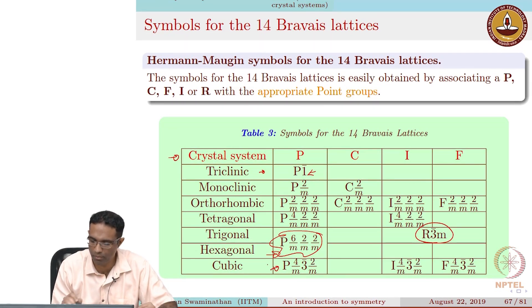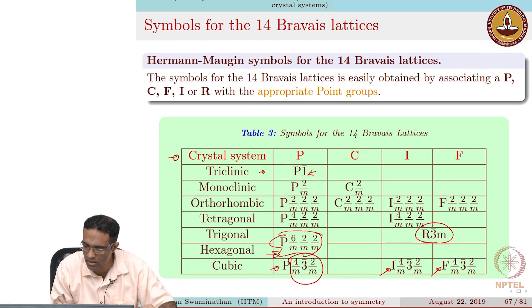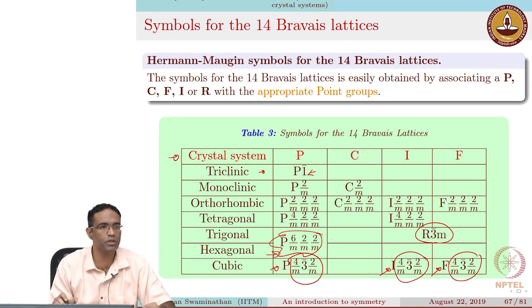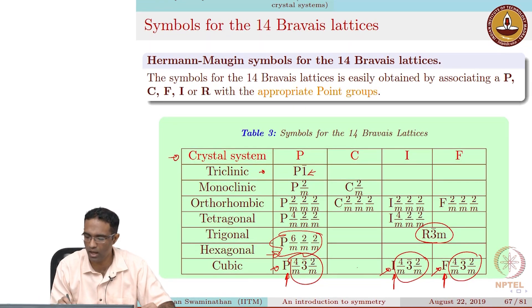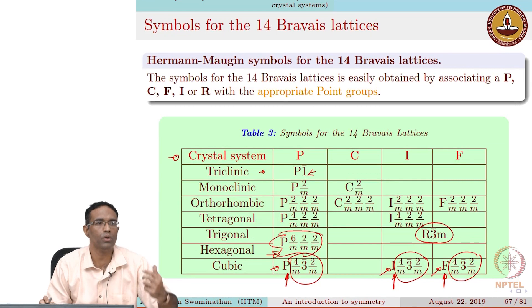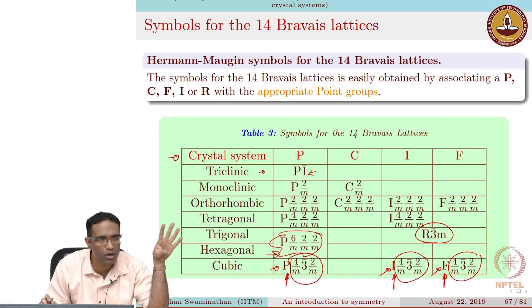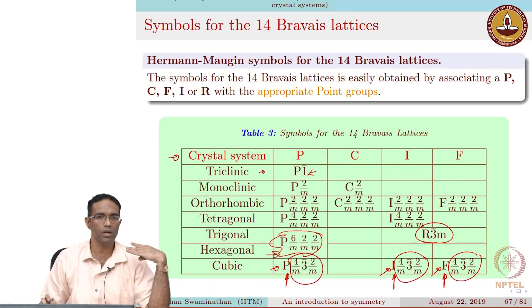For cubic, you can have a primitive version, a body-centered version, and a face-centered version. Notice that the only thing differentiating these individual space groups is the translation operator — P, I, or F — otherwise the point group is essentially the same. As we discussed previously, if you want to know the point group associated with a crystal, you just remove all its translational symmetry operators and you get the corresponding point group.